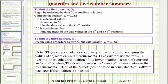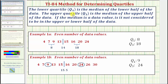Another way to explain how the TI-84 calculator finds the quartiles would be to say that the lower quartile, or Q1, is the median of the lower half of the data. The upper quartile, or Q3, is the median of the upper half of the data. However, if the median is a data value, it is not considered to be in the upper or lower half of the data.